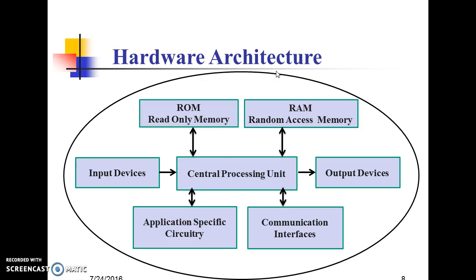Hardware Architecture consists of ROM (Read Only Memory), RAM (Random Access Memory), output devices, communication interfaces, application-specific circuitry, input devices, and the Central Processing Unit (CPU).